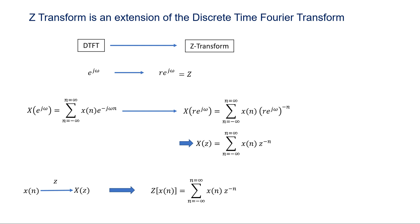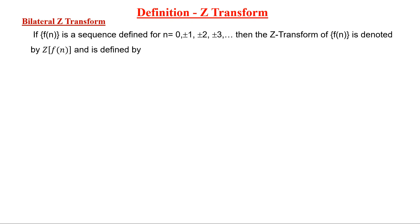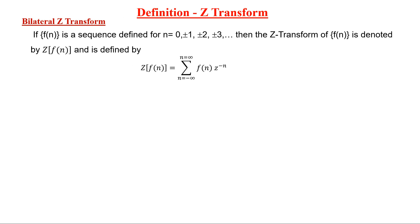The bilateral Z-transform: if the sequence f(n) is defined for n equals 0, ±1, ±2, ±3, etc., then the Z-transform of the sequence f(n) is denoted Z{f(n)} and is defined by Z{f(n)} equals the summation from n equals minus infinity to plus infinity of f(n)·z^(−n).